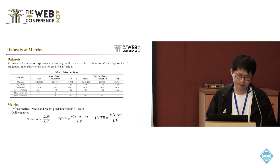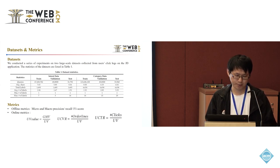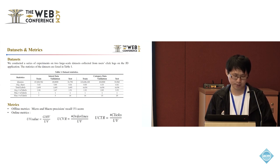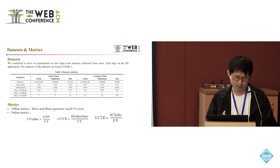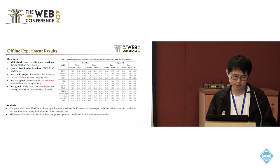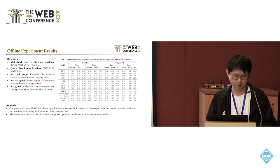To evaluate the effectiveness of the model, we conducted a series of experiments on two large-scale datasets collected from user click logs on the platform. For offline evaluation, we use metrics commonly used in multi-label classification, such as macro and micro precision, recall, and F1 score. For online evaluation, we use business metrics such as UV value, UCR, and UCTR. We compare the model with several baselines including multi-label classification methods and query classification methods. The model achieves significant improvement in F1 score.